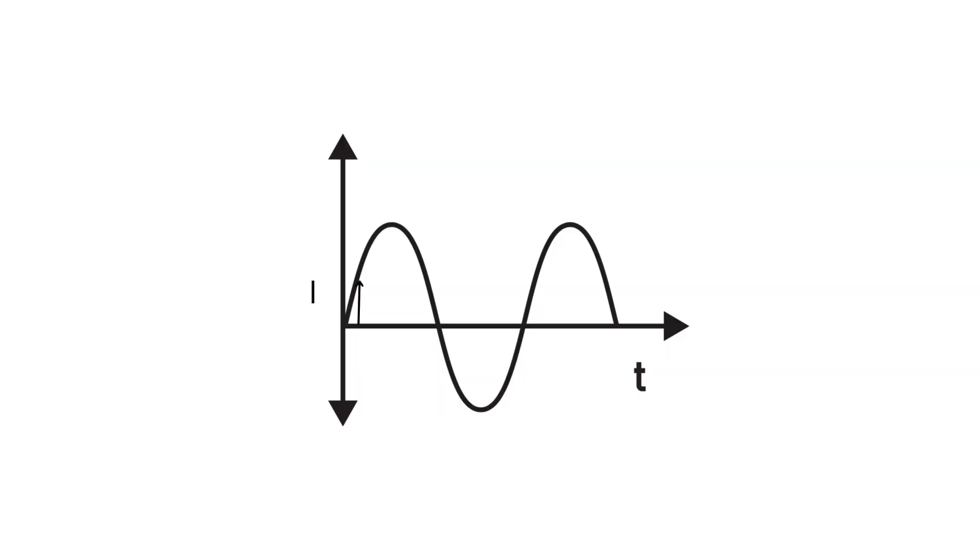AC will also build up in magnitude as time progresses, reaches a maximum value, and then gradually falls down to zero, before repeating the whole process again in the opposite direction. We will come back to this graph later in the video.